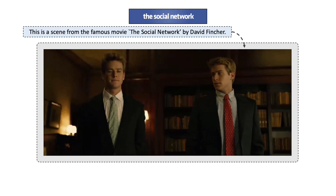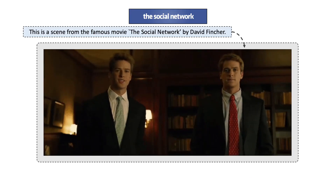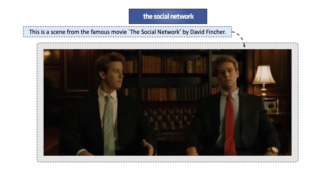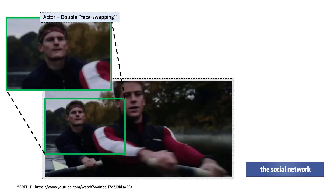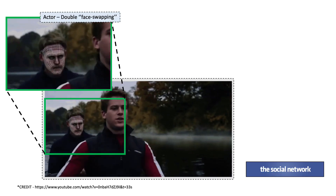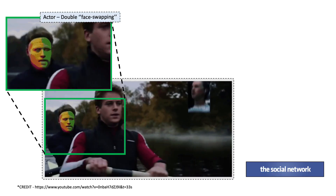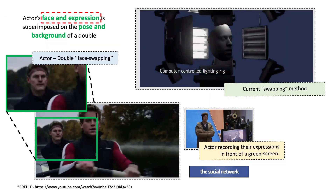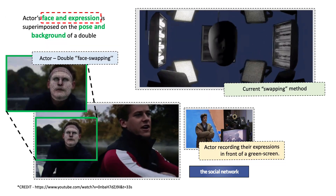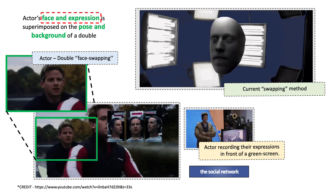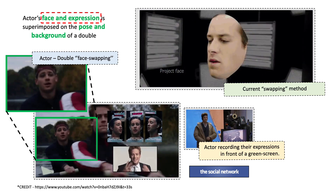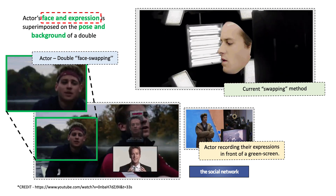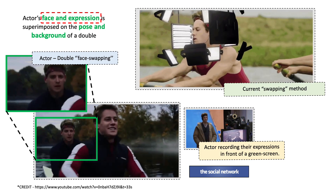Do you remember this famous scene from the movie The Social Network directed by David Fincher? The twin brothers are actually played by a single actor, Armie Hammer. At the time of the movie shoot, one of the brothers was always a body double. The scenes are then later edited in post-production where the face and expressions of the main actor are superimposed on the face of the body double. The pose and background of the original video are still retained.